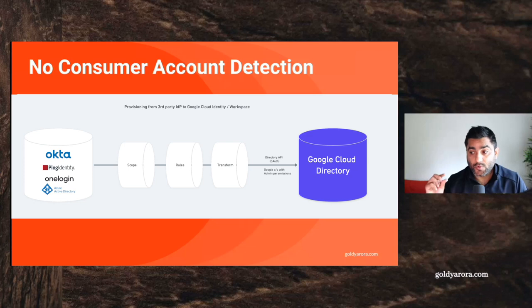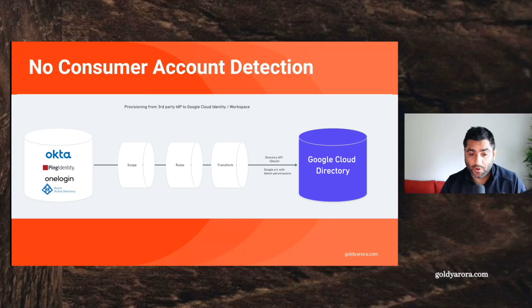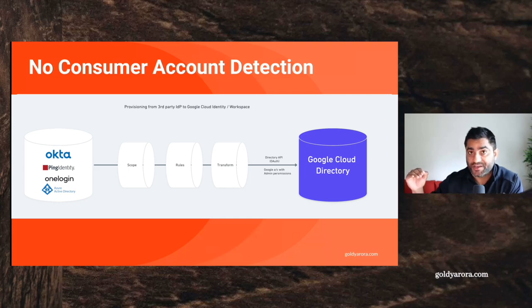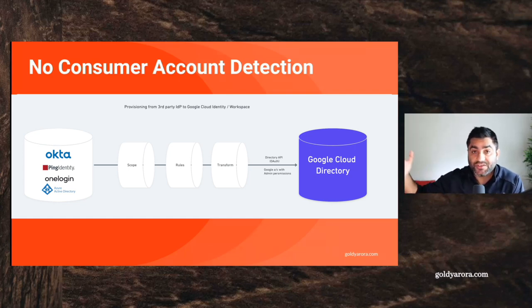The key point to note here is that Google's Directory API does not detect whether an account is a consumer account already or not — it will just go ahead and provision that user. So if you leverage any of these identity providers, or maybe you've created your own provisioning utility leveraging Google's Directory API, please do not use it right away. If you use it to provision all your users at once, you will lose the opportunity to send a data transfer request to those consumer accounts. The users will be created, but you will lose the chance to transfer data from those consumer accounts to the new work accounts.